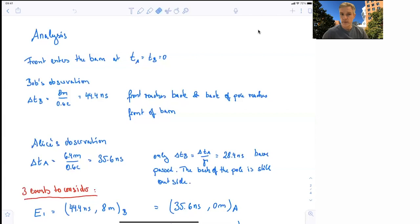Alice, however, sees the barn Lorentz contracted. It's 6.4 meters long. She moves at 0.6 times the speed of light. So for her, she reaches the back after 35.6 nanoseconds, in which case Bob's clock only shows 28.4 nanoseconds, because Alice's clock time is Lorentz contracted. So we can clearly conclude here that that's not enough time for Bob, such that the pole actually entered the barn for its full length. So the back of the pole is still outside.